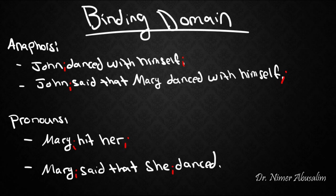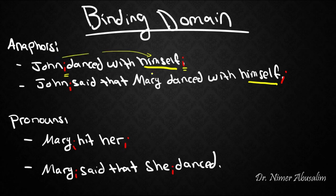Hello and welcome back to a new lecture on syntax. Let's quickly summarize: when it comes to anaphors, we said that an anaphor like 'himself' must be bound. In the first sentence, we have coindexation and John c-commands himself, therefore the anaphor 'himself' is bound and the sentence is grammatical.